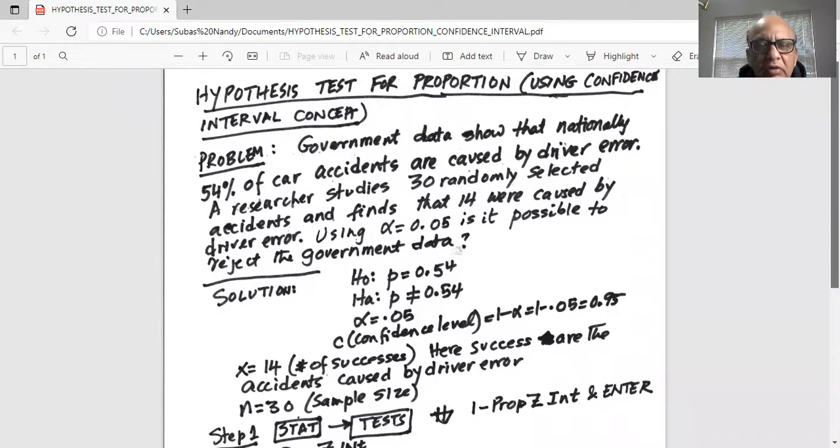Using alpha equal to 0.05, is it possible to reject the government data?